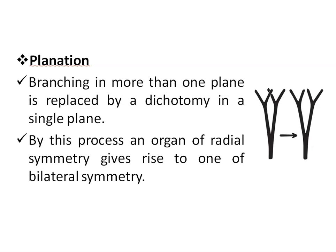The second process is planation, which means the rearrangement of telomes and mesomes from a three-dimensional pattern into a single plane. Branching in more than one plane is replaced by dichotomy in a single plane, producing a fan-shaped dichotomy. By this process, an organ of radial symmetry gives rise to one of bilateral symmetry, which mainly concerns the evolution of the leaf.